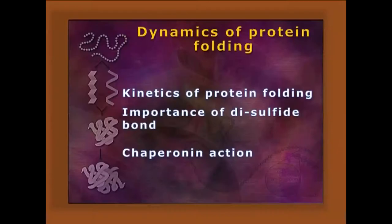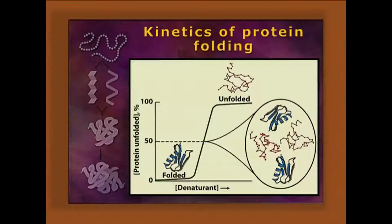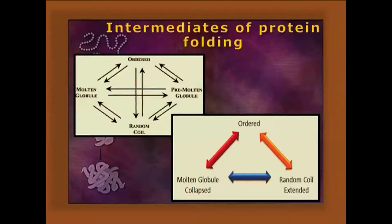Dynamics of protein folding includes the kinetics of protein folding, the importance of the disulfide bond, as well as chaperonin action. As it is a pathway-dependent kinetically important process, a sharp transition can be followed during protein folding and unfolding. Intermediates can be trapped as molten globule nucleation as well as final packed structure.